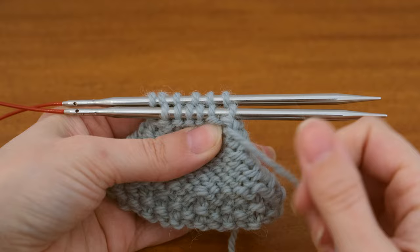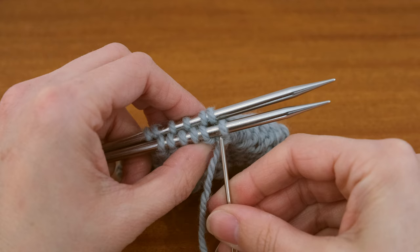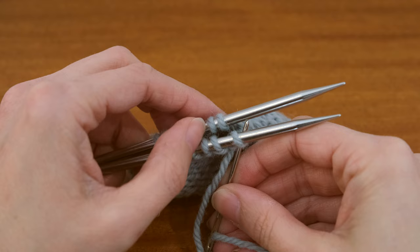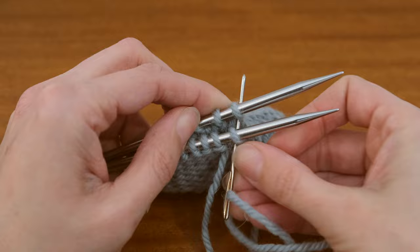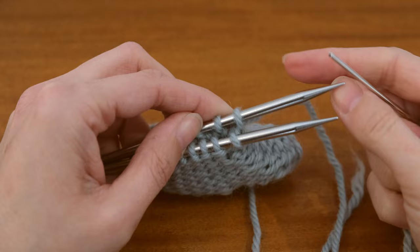There's no setup, so with the working yarn coming from the first stitch on the front needle, just go through the first stitch on the front needle as if to knit, and then continue that through to the first stitch on the back needle also as if to knit. Then just pull that through and you can slide that first stitch off the back needle.